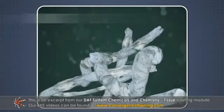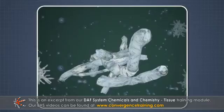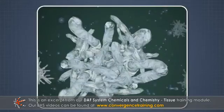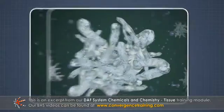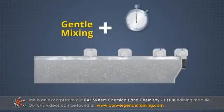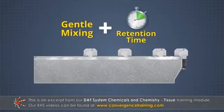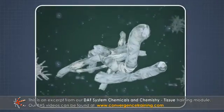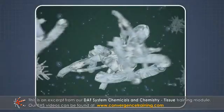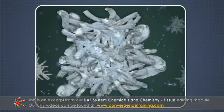The process of bringing the microfloc formed by coagulation together into even larger aggregates or floc is called flocculation. The flocculation process follows the coagulation process, and it requires gentle mixing and sufficient retention time to allow the large floc to form. During flocculation, the floc size of the particle aggregates continues to build and grow through additional particle collisions and interactions with added synthetic polymers.